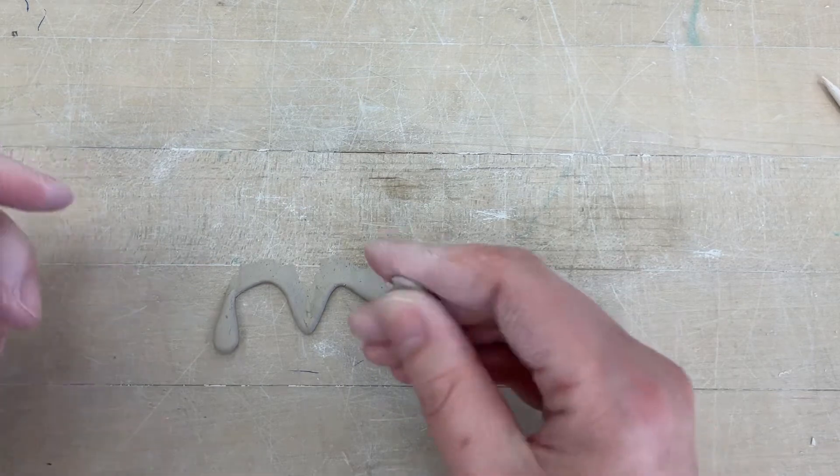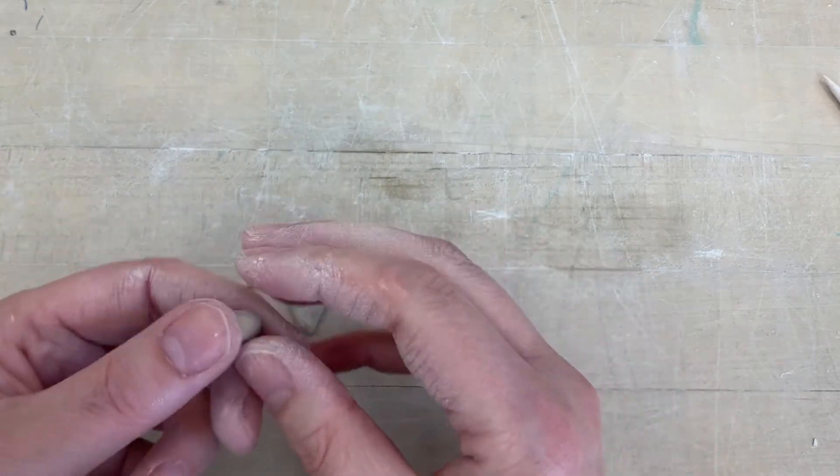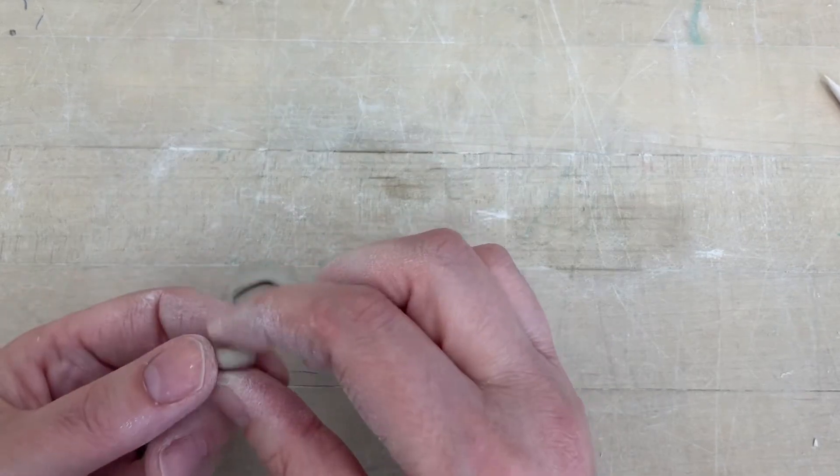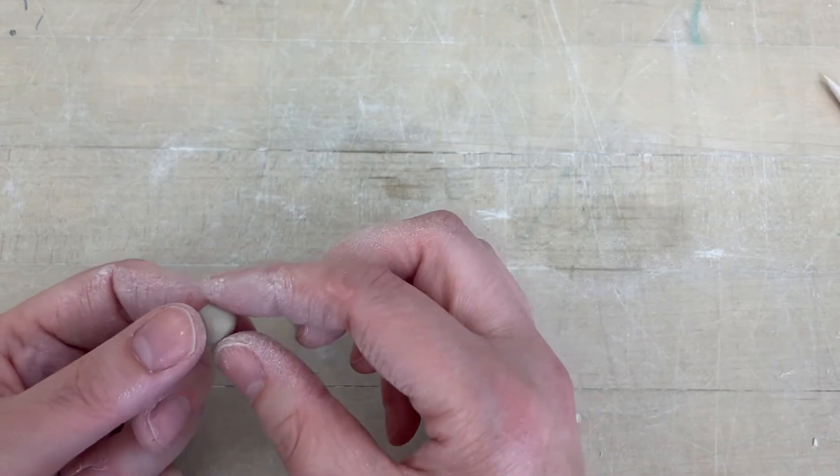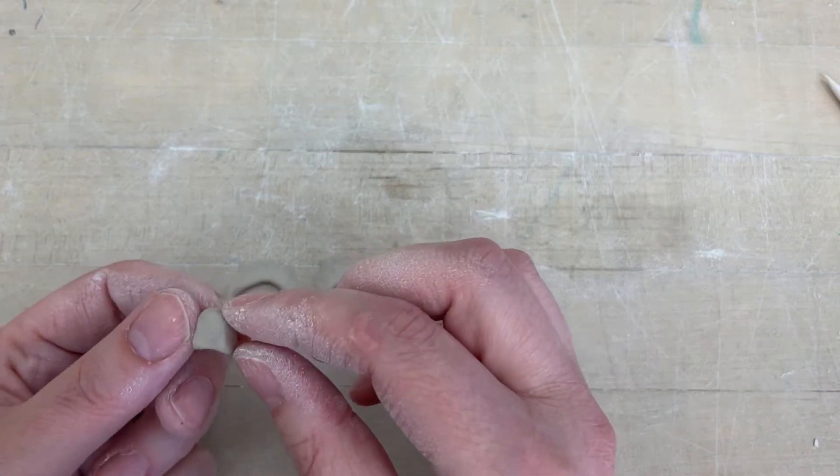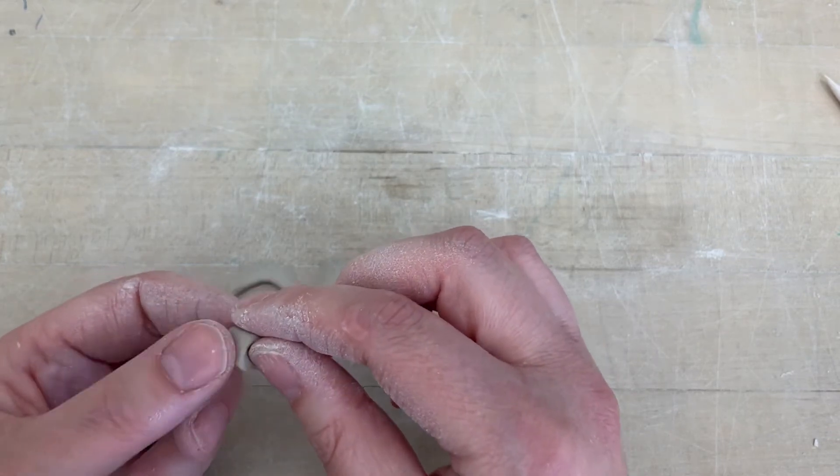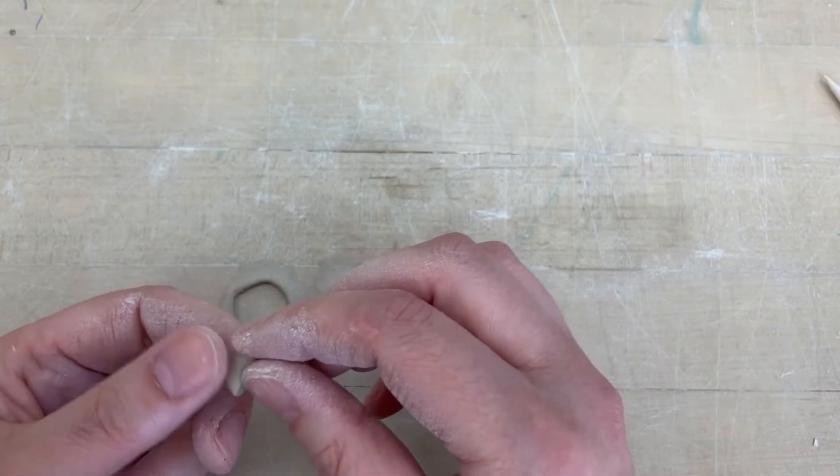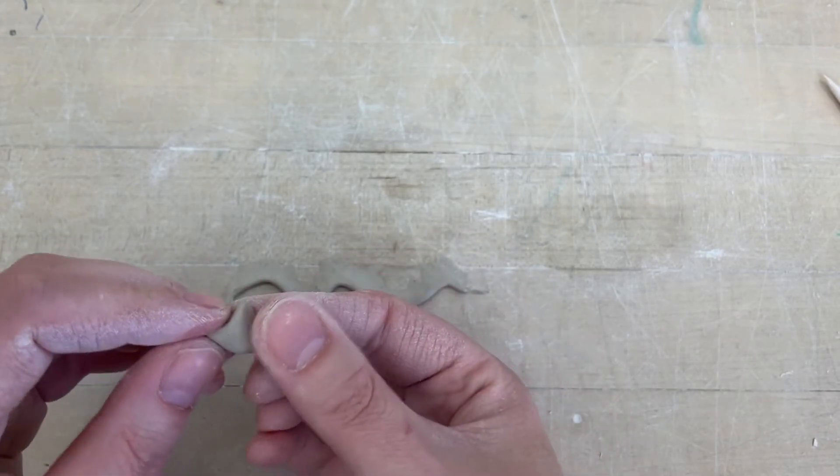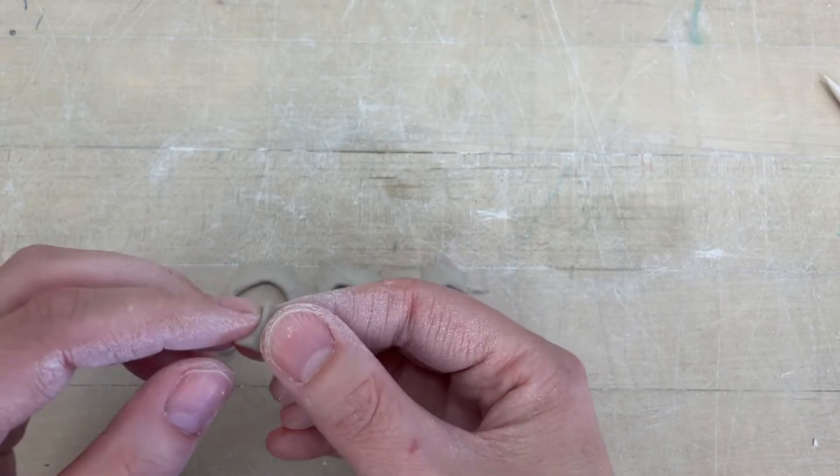So if I have a slightly wider spot that I want to add a drip onto now, this one could go either way. This one's definitely wider, but if I have a slightly wider spot, I'm going to start with a circle and kind of dent to make it like, I don't know, like a Pac-Man ghost looking kind of thing, flatten it out a little bit.